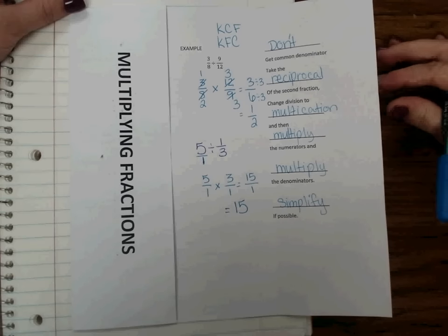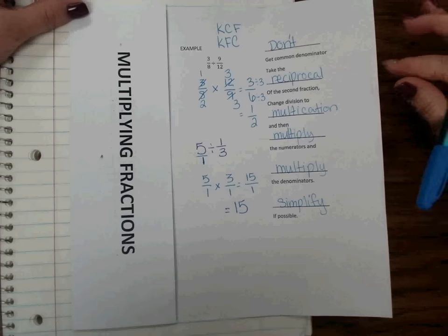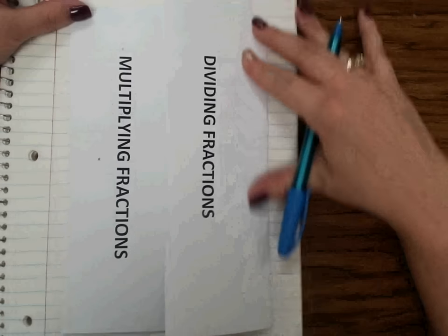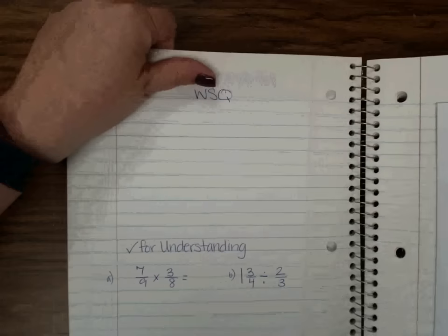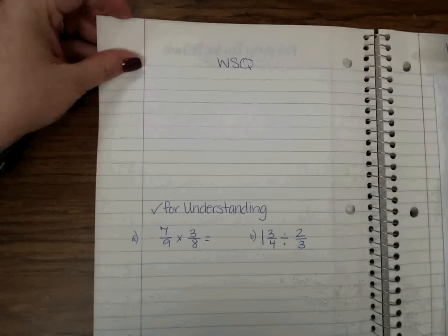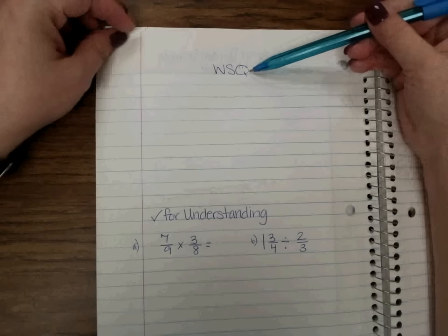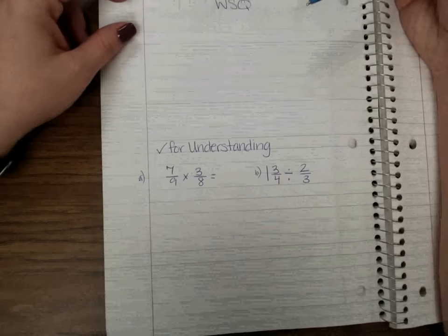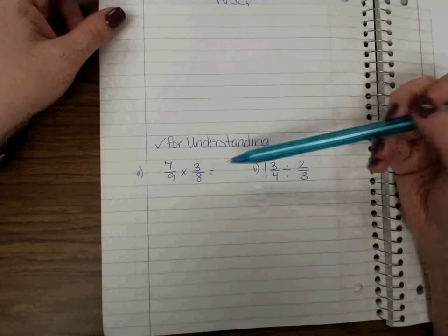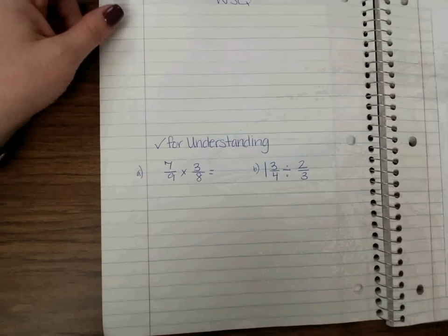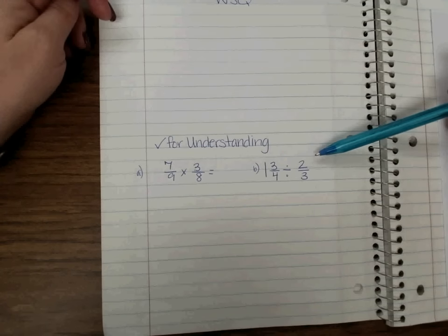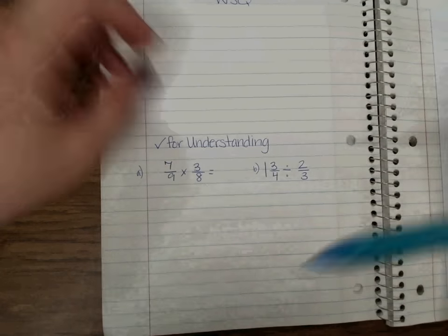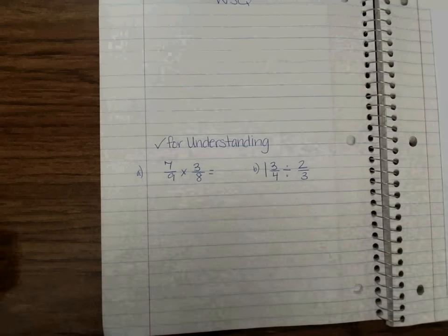Okay. So now we've also talked about dividing fractions. It involves keep change flip, which is still using multiplication. So dividing fractions is actually multiplying the way that we do it. If you look on the opposite side, we do have our WISK. Make sure that you write a statement down for that. That is part of our work. And then I have two questions for you. I have 7 ninths times 3 eighths. And then I have 1 and 3 fourths divided by 2 thirds. I look forward to checking your answers soon. Thank you.